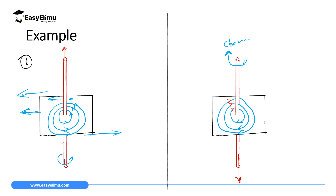We can even use Fleming's right hand rule. If you grasp this conductor so that the thumb points in the direction of current, then the fingers behind the wire will be pointing to the right side of the screen, and then in front they will be pointing to the right side. Even Ampere's swimming rule will give us the same result.